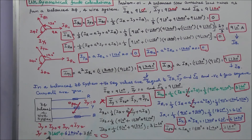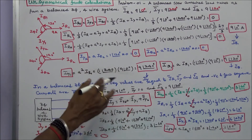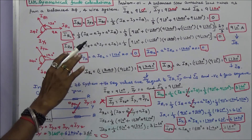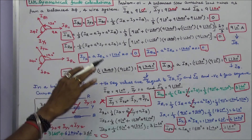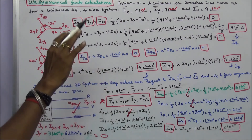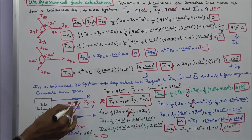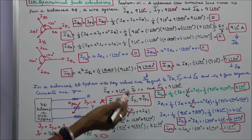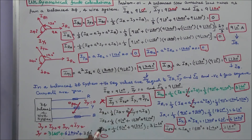So IY0 is equal to 3 angle 60 degrees, IY1 is equal to 6 angle 240 degrees, and IY2 is equal to 3 angle 60 degrees. IY is equal to IY0 plus IY1 plus IY2, which equals zero. This is the beauty of Symmetrical Component Theory. In the first case, for a balanced three-phase four-wire system, positive sequence current only exists and negative and zero sequence currents are zero. In the second case, when the Y phase is removed so IY equals zero, we can prove it using Symmetrical Component Theory. With this, I conclude my lecture. Thanks for listening.